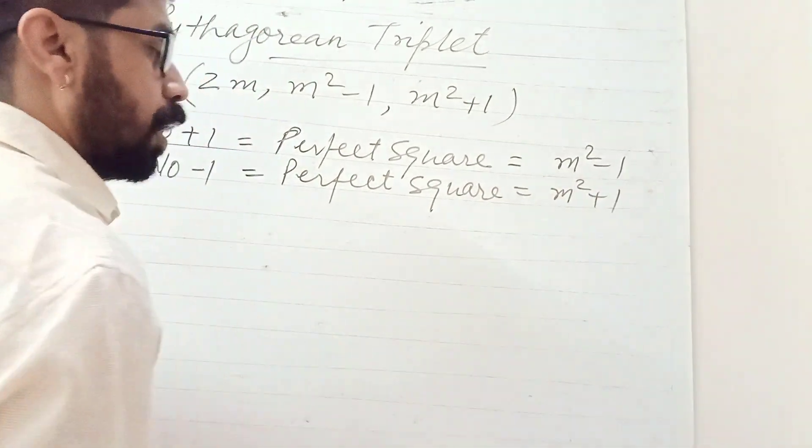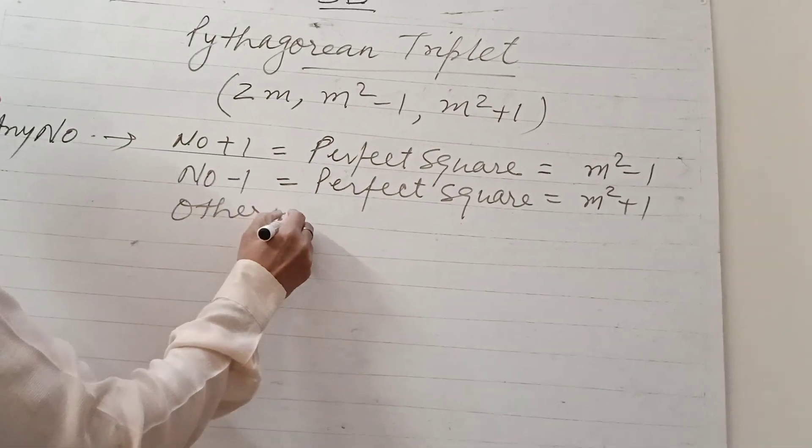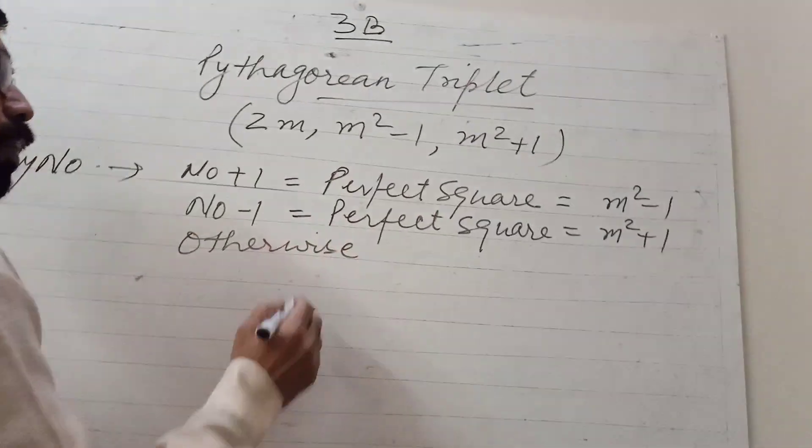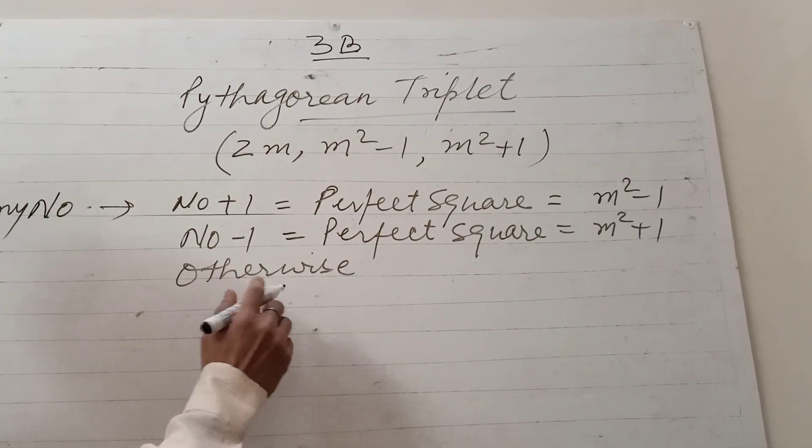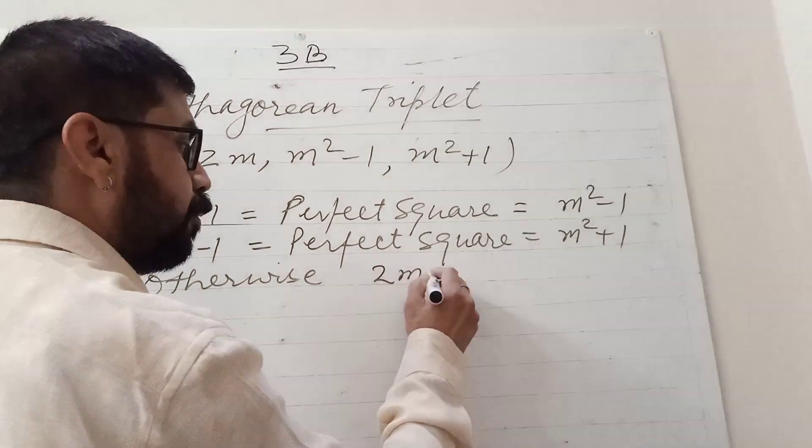Otherwise, if it is not satisfying these two conditions, then this is the value of 2m.